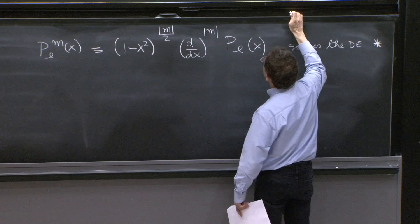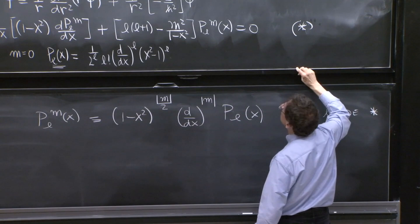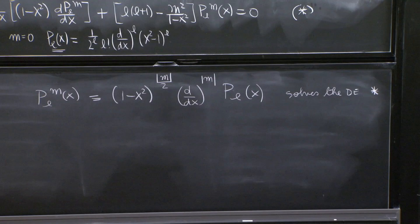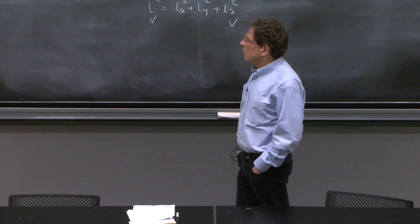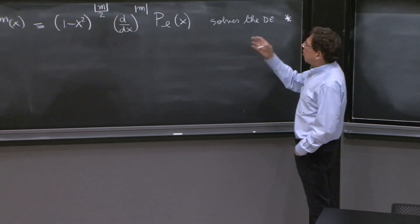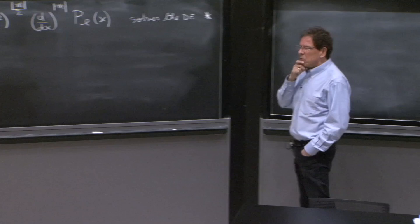So there's square roots here, possibly. An absolute value of m means that this is always in the numerator, whether m is positive or negative. And d dx acting exactly absolute value of m times on PL of x. The fact is that this definition solves the differential equation. This takes a little work to check.